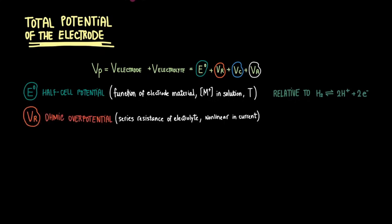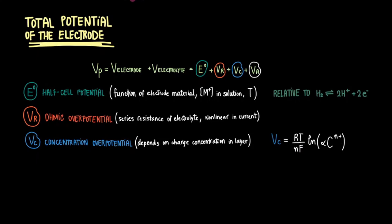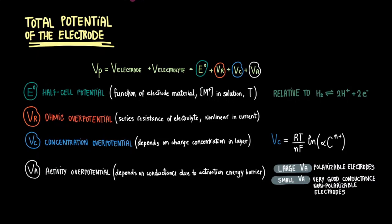The ohmic overpotential is then the series resistance of the electrolyte, and it is non-linearly proportional to the current. The concentration overpotential depends on the actual concentration of the charge on the layer and can be calculated by the following equation. The activity overpotential depends on the conductance due to the activity energy barrier and will be large for polarizable electrodes and small for non-polarizable electrodes with very good conductance.